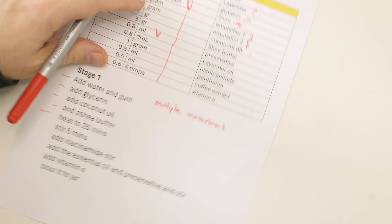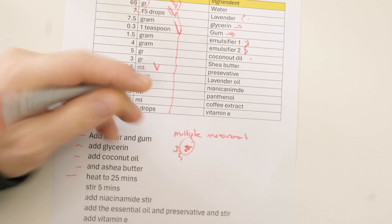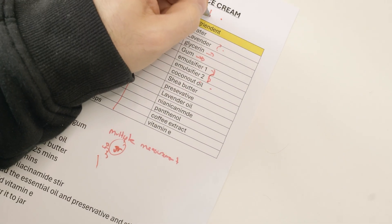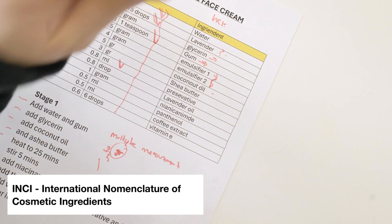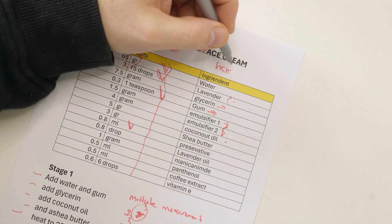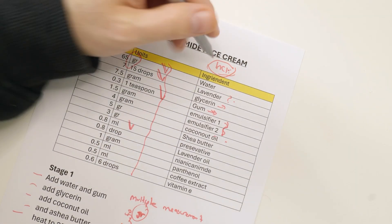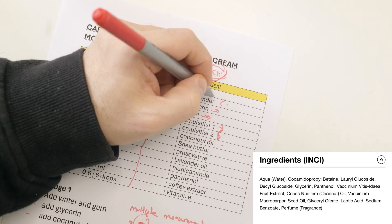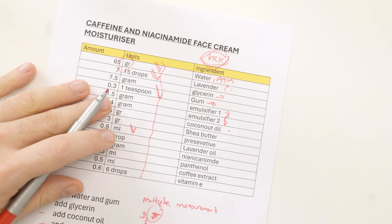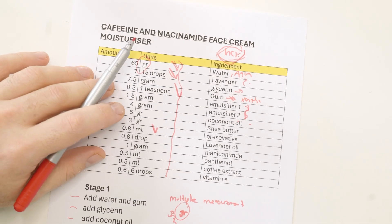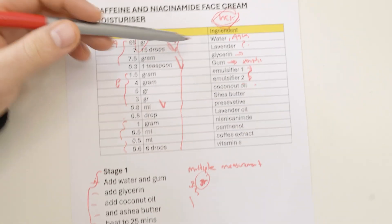Everything needs to be one measurement: always use grams — it's the universal standard so you can adjust the formula. Also always use INCI names where you can. If you don't know what INCI means, it stands for International Nomenclature — it's the global universal ingredient terminology. For example, water in INCI is 'aqua.' This is the standard used globally when listing ingredients.